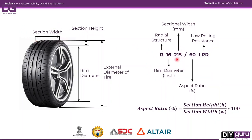The next value, 60, is the aspect ratio. Aspect ratio is the ratio between the section height of the tire and the section width. The 60 indicates that the aspect ratio for this particular tire is 60 percent.